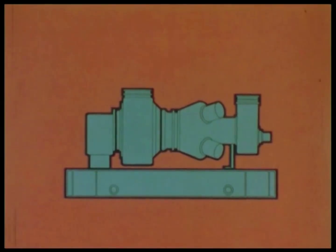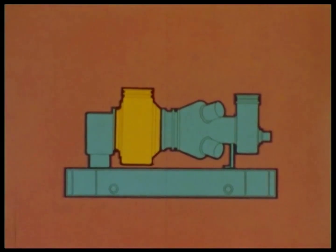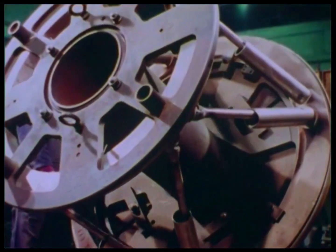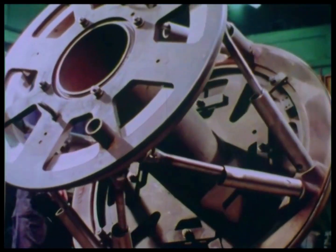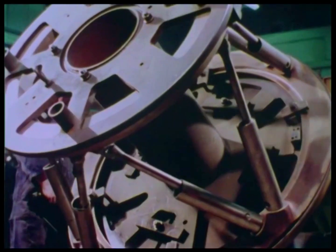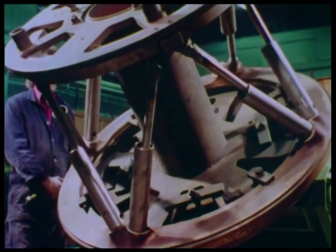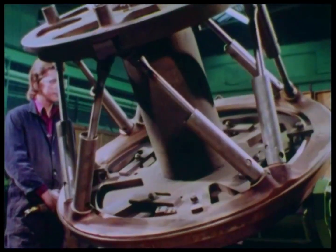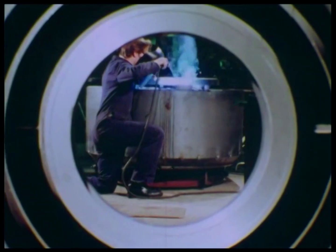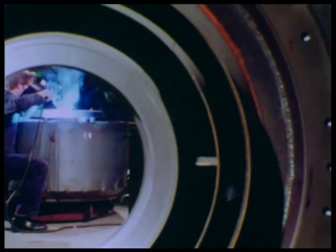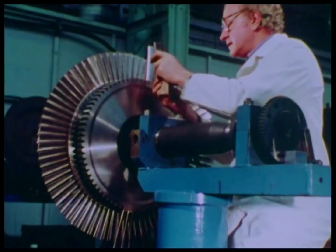Important design features are also incorporated in the power turbine. It is carried from the gearbox by a triangulated tubular structure. Since the struts pass through the exhaust duct, they are encased in tubular outer shields and cooled by air. The whole assembly is designed to be compact and rigid with alignment maintained between static and rotating elements.